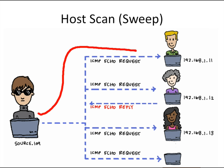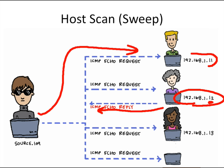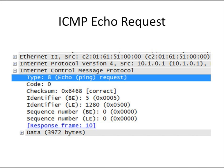An attacker might do an active scan by sending out an ICMP echo request — ICMP is protocol number 1. If a response comes back, the attacker now knows that IP address is on the network. However, if no response comes back, that doesn't mean the system is down — it means the system possibly is up and didn't want to respond. Many operating systems have stateful firewalls that won't respond to a ping request unless they initiated the conversation.